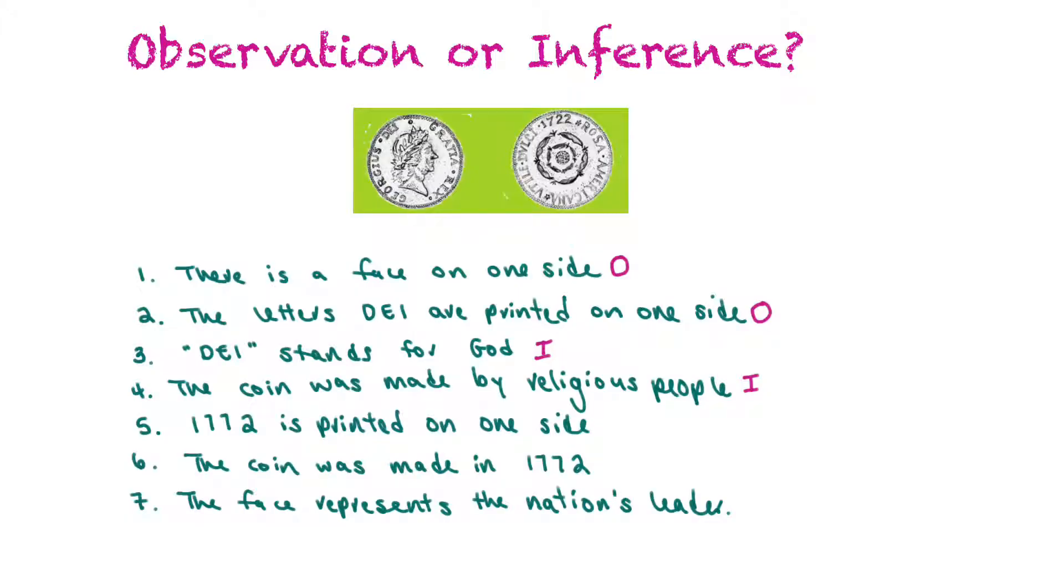The next statement says the numerals 1772 are printed on the coin, and those numerals are found right there, so that would also be an observation. The next statement says the coin was made in the year 1772. That would be an inference. We don't know if those numerals are representing a year. They could just be random numerals. And then the last statement says the face on the coin represents the nation's leader. So whether it's an emperor or a president or a king, we don't know that. We can't observe that. That would be an inference.